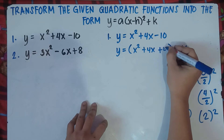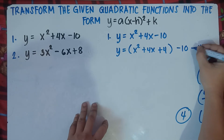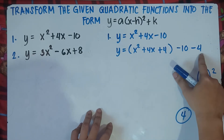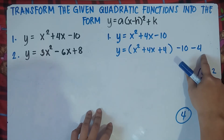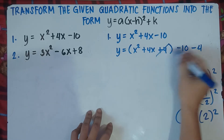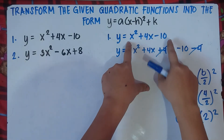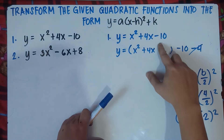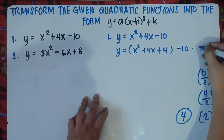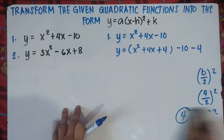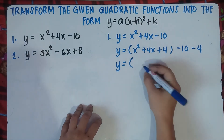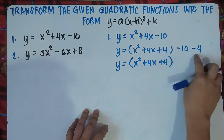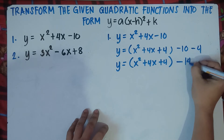Once you add 4 here inside the parenthesis, you subtract 4 on the last part. This keeps the equation balanced because positive 4 combined with negative 4 is 0. So add plus 4 inside, then minus 4 on the right side. Then simplify: negative 10 minus 4 — since the signs are the same, copy the sign and add the numbers: 10 plus 4 is 14, so negative 14.